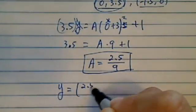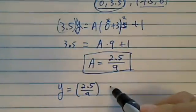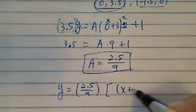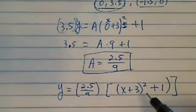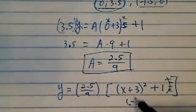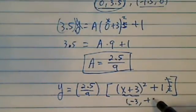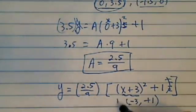So the final answer would be y is equal to 2.5 divided by 9. That's my coefficient. And then x plus 3 squared and then plus 1. This gives me the vertex of minus 3. First child has more work, remember, first child. And the second one you left alone. This is the vertex.